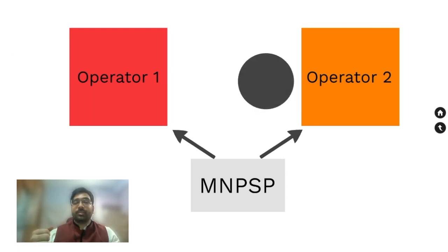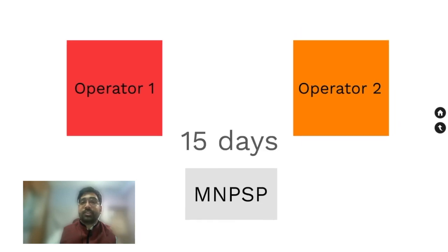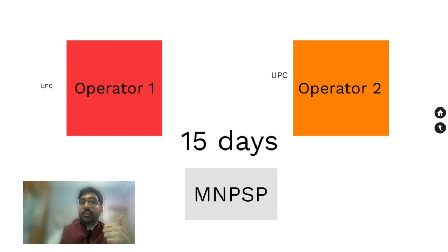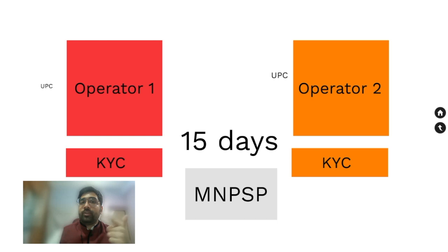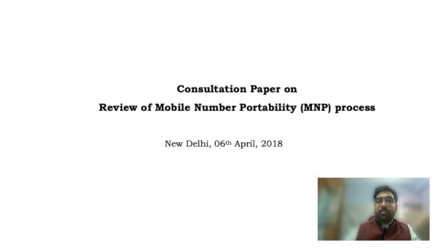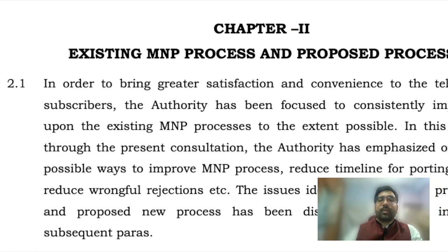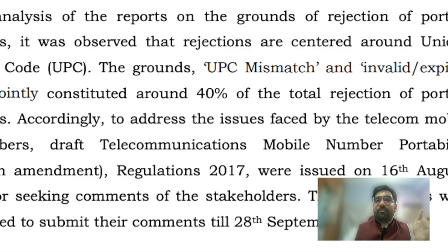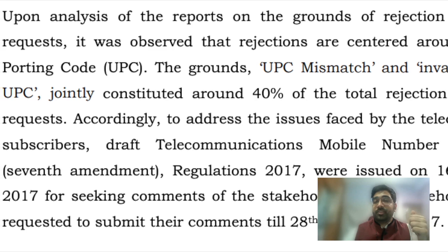This completes the porting process. According to the telecom guidelines, all this should be completed within 15 days of generating the UPC. You might have observed that in this process there are multiple steps which look rather inefficient. For instance, the unique porting code generated in the first step switches hands multiple times, and the subscriber requesting the port is required to redo the KYC process even though they have already completed this process with the initial provider. The telecom regulatory authority did recognize these problems and put out a consulting paper requesting ideas to solve them. The paper suggests there is a 40% failure rate to port numbers due to mismanagement of the UPC.